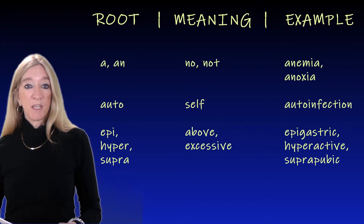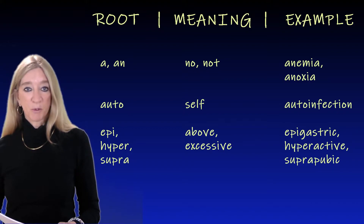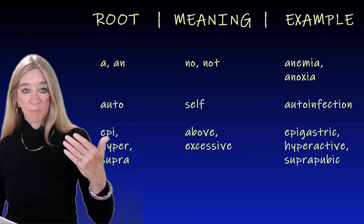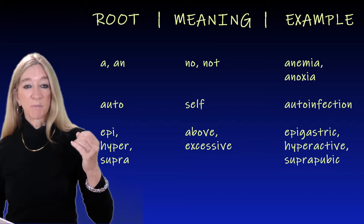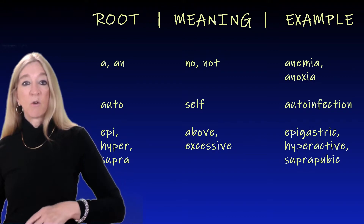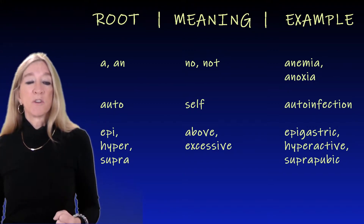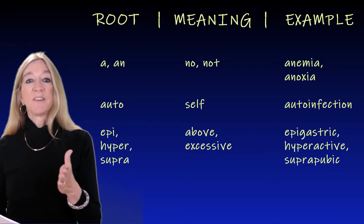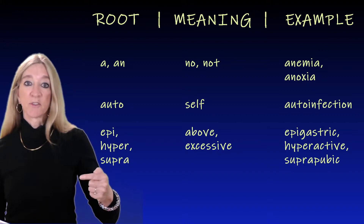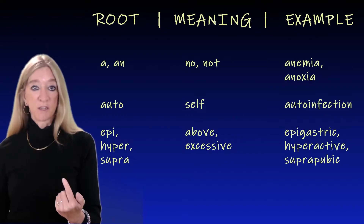The next roots, 'epi,' 'hyper,' and 'supra,' meaning above or excessive. That can be physically above, as in epigastric — the upper and median portion of the abdomen lying on top of the stomach — or hyperactive, simply meaning excessively active, or suprapubic, meaning above the pubis. A suprapubic catheter is actually inserted through a hole in the abdomen directly over the pubis instead of being inserted through the urethra.